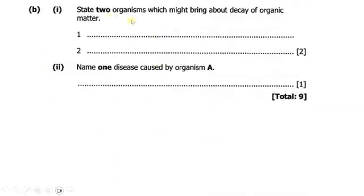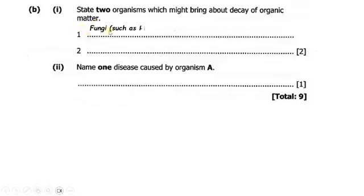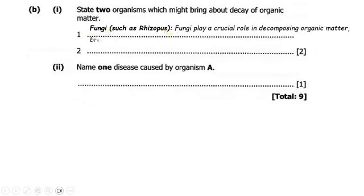Part B, number 1: state two organisms which might bring about the decay of organic matter. One organism is fungi, such as Rhizopus. Fungi can bring about decay by breaking down organic matter and releasing nutrients back into the ecosystem.